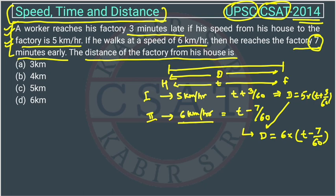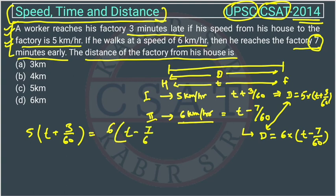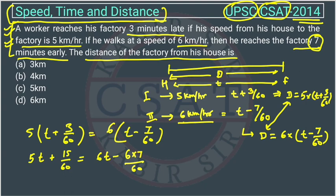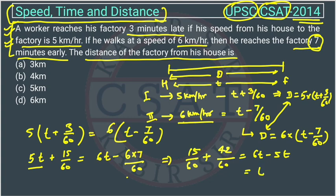Since both D values are equal, we equate them: 5(T + 3/60) = 6(T − 7/60). Expanding: 5T + 15/60 = 6T − 42/60. Solving: 57/60 = 6T − 5T, so T = 57/60 hours. This is the correct travel time in hours.